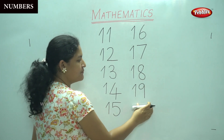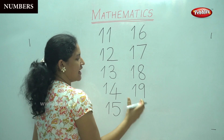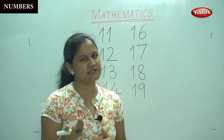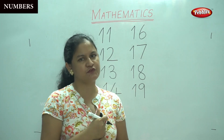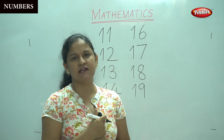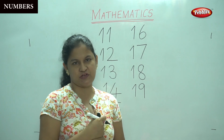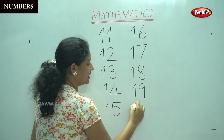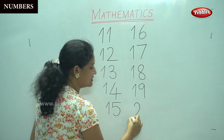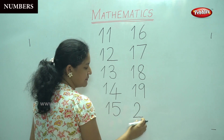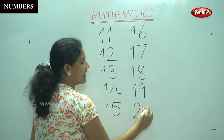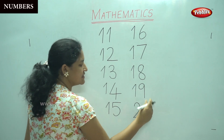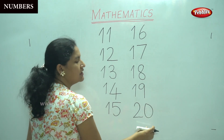And for number 20, what will you write? Will you write number one before the 20? No, you will start with number two. So a curve and a sleeping line — number two — and you will add a zero. This is number 20.